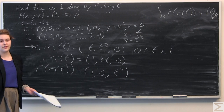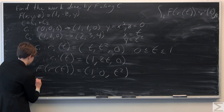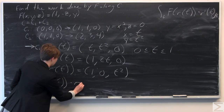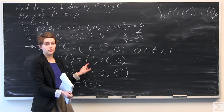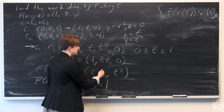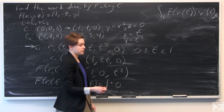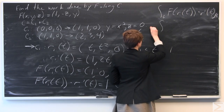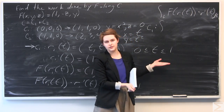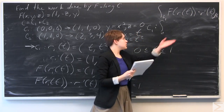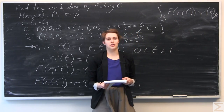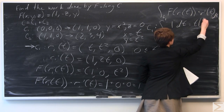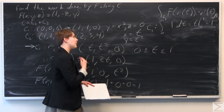For the integral, we take the dot product of F of R1 of T with R1 prime of T: 1 times 1 is 1, 0 times 2T is 0, and T squared times 0 is 0. So the dot product equals 1. The integral over C1 from 0 to 1 of 1 DT equals T evaluated from 0 to 1, which equals 1.